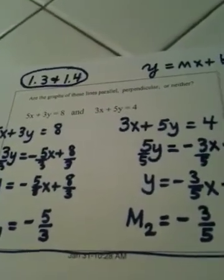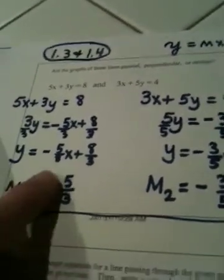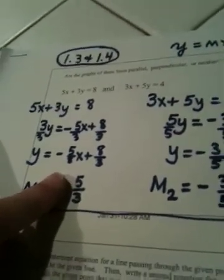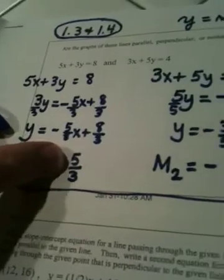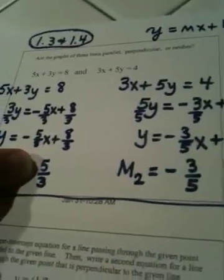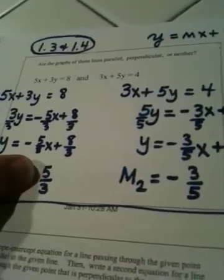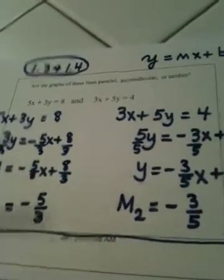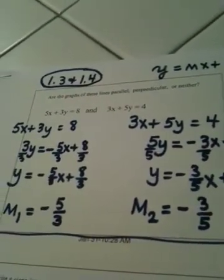So don't fall into that trap. If there was no negative sign here, if it was just 5 thirds and this was negative 3 fifths, then they would truly be opposite reciprocals. But unfortunately, they're both negative.